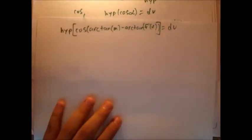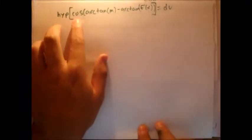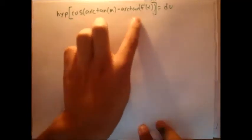Okay, welcome back to the second part. We were left with hypotenuse times cosine of arctangent m minus arctangent f of x.